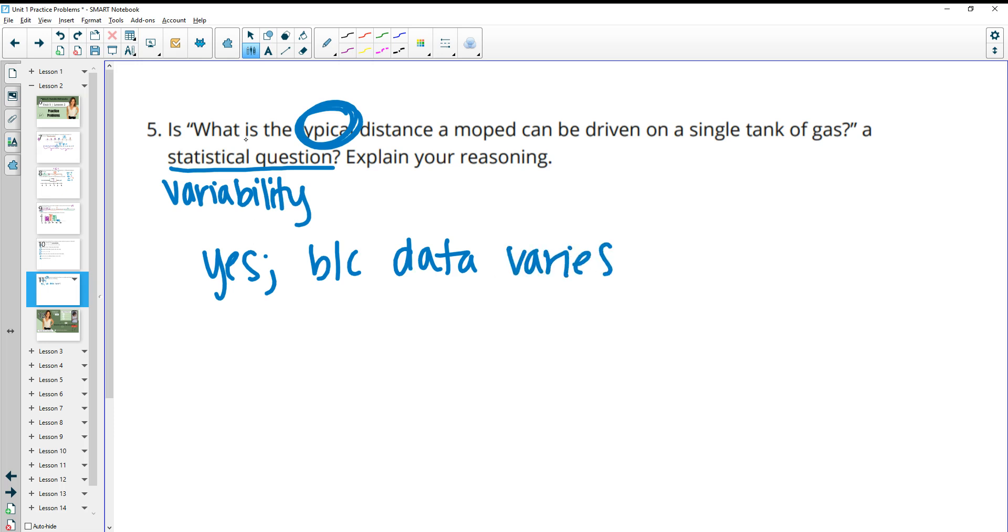The way it would be not statistical is if it said how far did your moped drive on your last tank of gas, because then there's an exact answer that happened there. But when it says words like typical, usually that means it's going to be a statistical question and there's going to be variability.